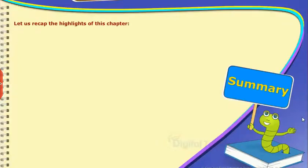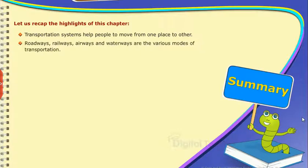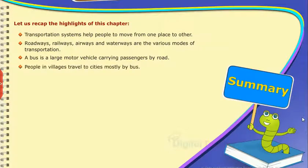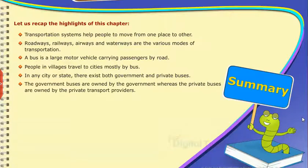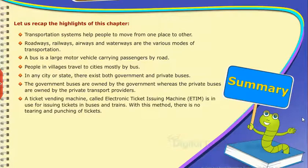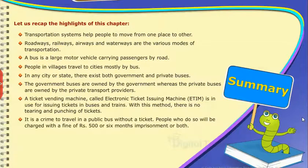Summary: Transportation systems help people to move from one place to another. Roadways, railways, airways, and waterways are the various modes of transportation. A bus is a large motor vehicle carrying passengers by road. People in villages travel to cities mostly by bus. In any city or state, there exist both government and private buses. A ticket vending machine called the Electronic Ticket Issuing Machine (ETIM) is in use for issuing tickets in buses and trains — with this method, there is no tearing and punching of tickets. It is a crime to travel in a public bus without a ticket; people who do so will be charged with a fine of Rs. 500 or 6 months' imprisonment, or both.